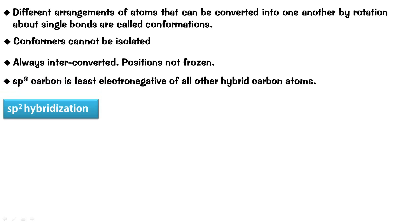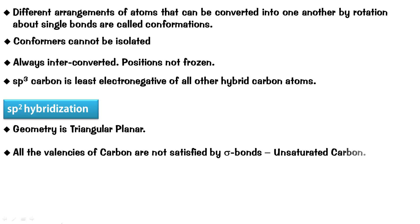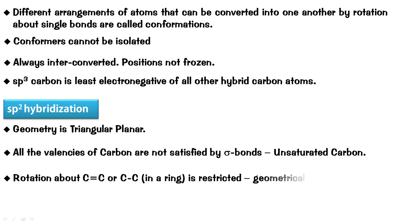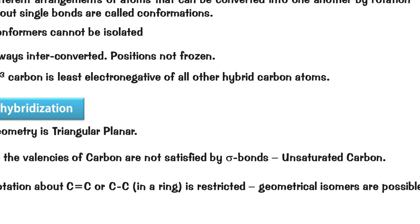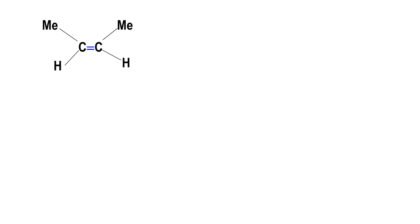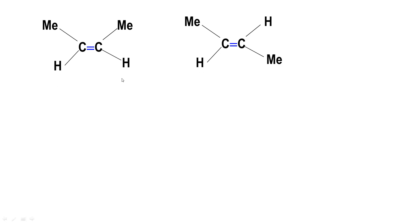Let us check the next hybridization - sp2. The geometry of an sp2 hybridized carbon is triangular planar, and all the valencies of carbon in this case cannot be satisfied by sigma bonds - it is bound to form pi bonds. Such carbons are called unsaturated carbons. Rotation about a carbon-carbon double bond or a carbon-carbon single bond in a ring is restricted, and this leads to what is known as geometric isomers. You cannot rotate these groups across a double bond - carbon double bond carbon rotation is not free; it is a hindered, blocked rotation. Therefore, these molecules are frozen and can be isolated.